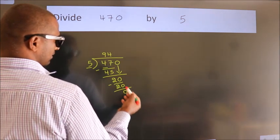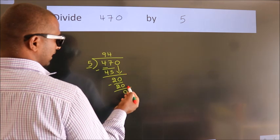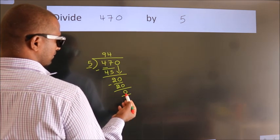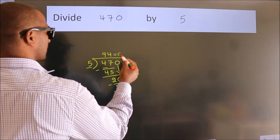After this, no more numbers to bring down. And we got remainder 0. So this is our quotient.